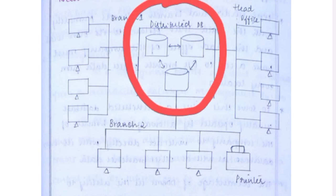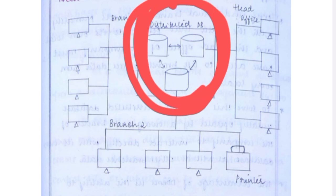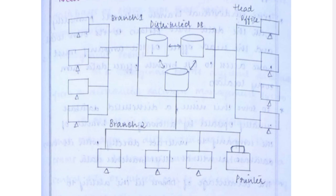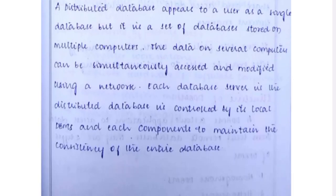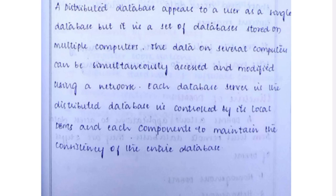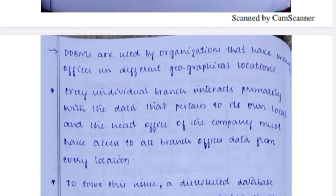Looking at the diagram, we have three databases distributed to three clients. Branch one, branch two, and branch three each use different portions of the data — the database is distributed into three parts. So a distributed database management system appears as a single database but is actually a set of databases stored in multiple locations, distributed to several clients.